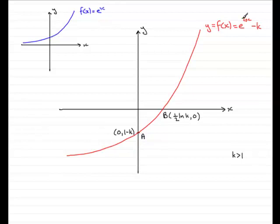It's a standard graph that goes through the point 1 on the y axis, because if x is 0, e to the 0, or anything to the power of 0, is always going to be 1.